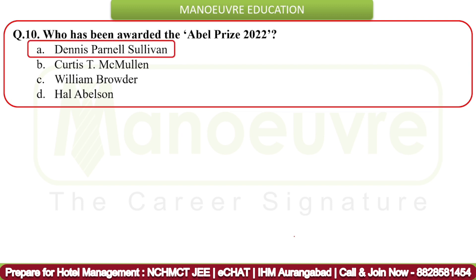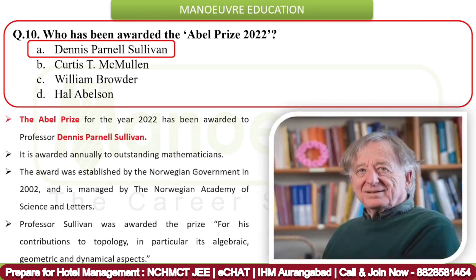Next question: Who has been awarded the Abel Prize 2022? The correct answer is Dennis Parnell Sullivan. The Abel Prize for 2022 has been awarded to Professor Dennis Parnell Sullivan. It is awarded annually to outstanding mathematicians. The award was established by the Norwegian government in 2002 and is managed by the Norwegian Academy of Science and Letters. Professor Sullivan was awarded the prize for his contributions to topology, in particular its algebraic, geometric, and dynamical aspects.